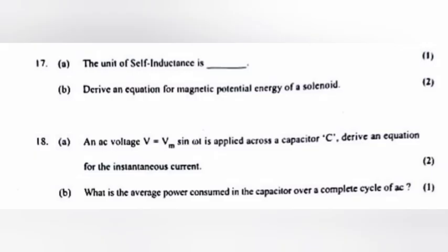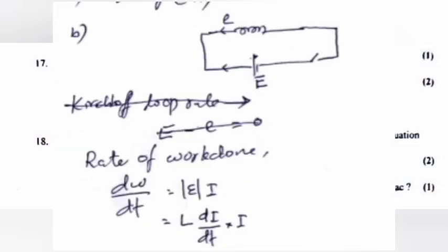Question 21 A: The unit of self-inductance is? Answer: Henry H. Derive an equation for magnetic potential energy of a solenoid.